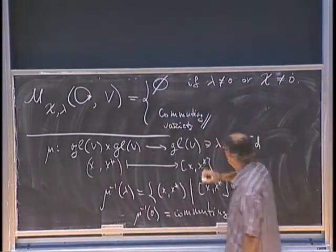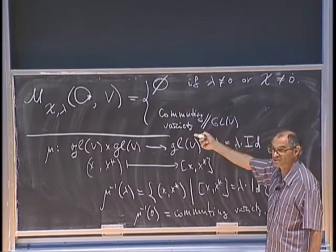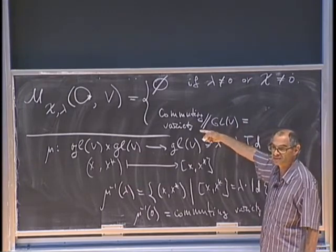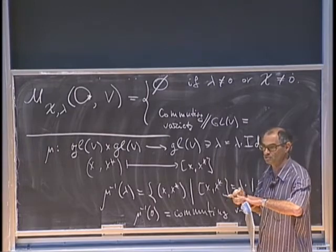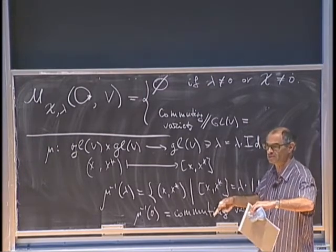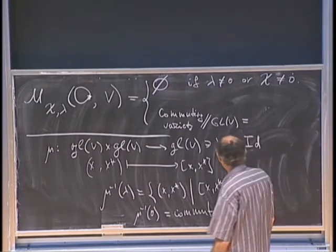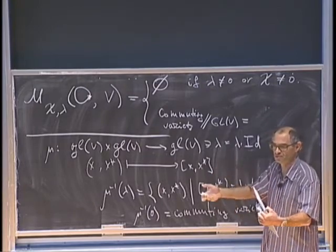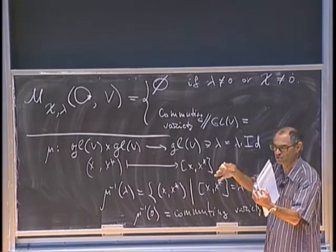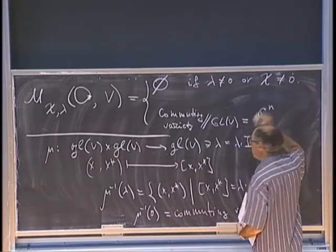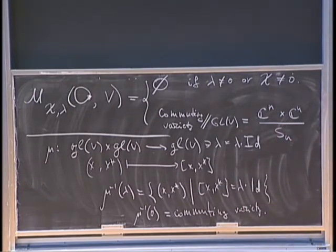This is the commuting variety double-slash GL_V (categorical quotient, since chi is zero). The answer is: take two commuting matrices and look at them mod simultaneous conjugation. The only invariant is simultaneous eigenvalues. These are n-tuples of eigenvalues, well-defined up to simultaneous permutation, so the answer is (C^n × C^n) / S_n, or equivalently (C^2)^n / S_n.